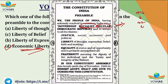These three words — socialist, secular and integrity — were added in 1976 under the 42nd Constitutional Amendment Act. The preamble reads: We the people of India, having solemnly resolved to constitute India into a sovereign, socialist, secular, democratic republic and to secure its citizens justice — social, economic and political; liberty of thought, expression, belief, faith and worship; equality of status and opportunity; and fraternity assuring the dignity of the individual and the unity and integrity of the nation. This was adopted on the 26th day of November 1949. The objectives of justice and liberty are mentioned, and also the date of adoption of the constitution.